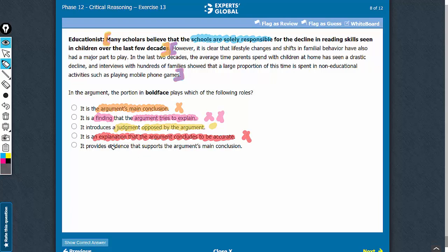Look at answer choice E. No, it is not an evidence. It is an opinion. Someone's opinion is generally not an evidence. And no, it is not supporting the argument's main conclusion. Two cross marks here.